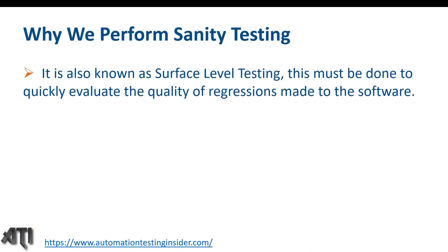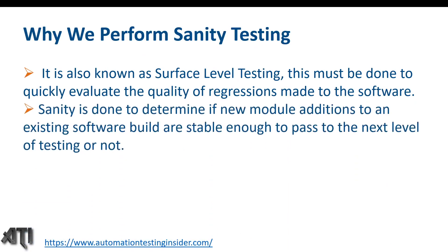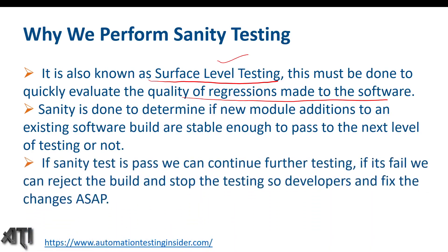Why do we perform sanity testing? It is also known as surface-level testing. This must be done to quickly evaluate the quality of regressions made to the software — we perform basic, quick, and speedy testing. It is done to determine if new module additions to an existing software build are stable enough to pass to the next level of testing. If the sanity test is passed we continue further testing; if it fails, we reject the build, stop the testing, and developers fix the changes as soon as possible.